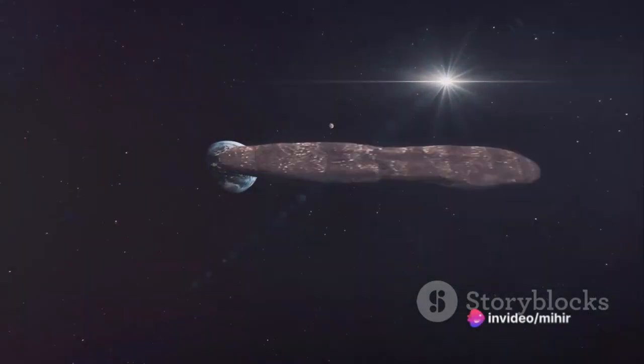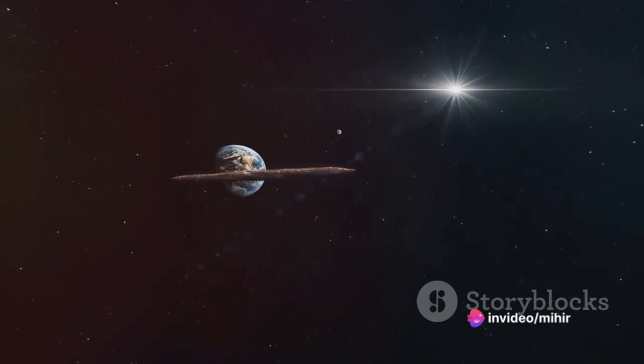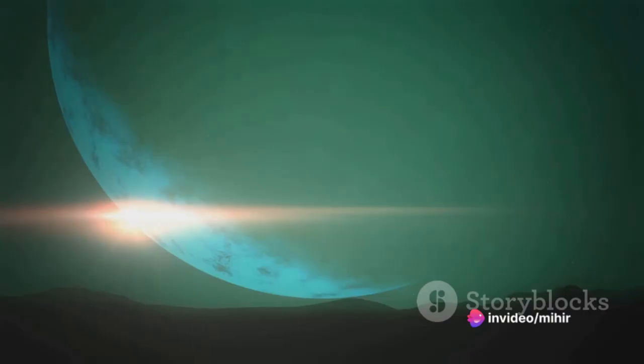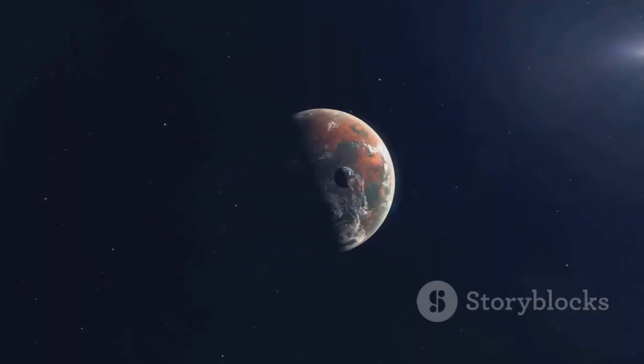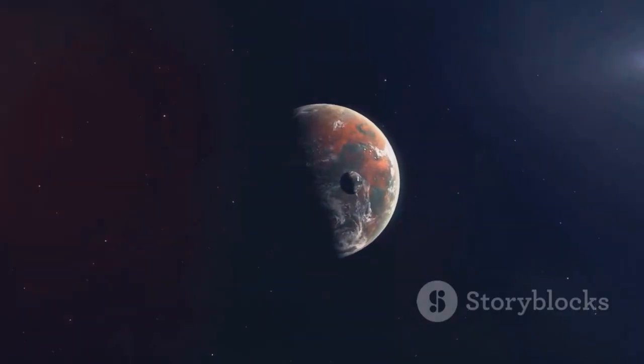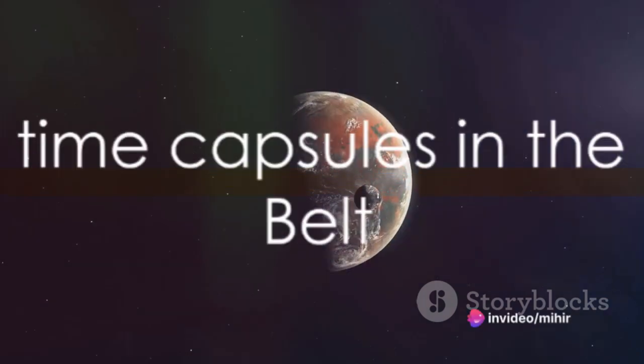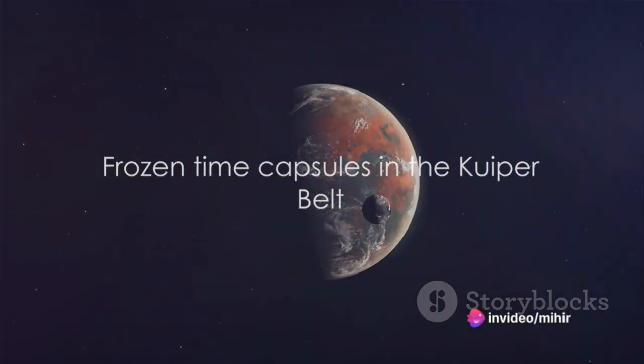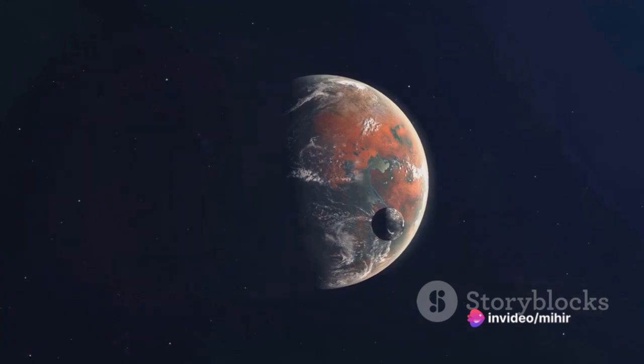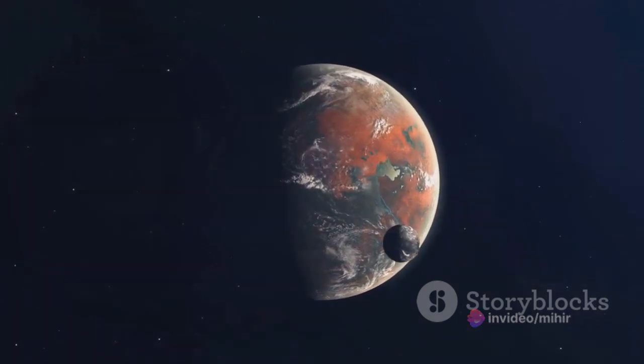Its surface is composed of a variety of ices and has been shaped by both impacts and possible internal activity. It has a thin atmosphere of nitrogen, methane, and carbon monoxide that expands when Pluto comes closer to the Sun and collapses as it moves farther away. This tiny world also has five known moons, with Charon being the largest, nearly half the size of Pluto itself.